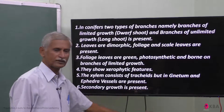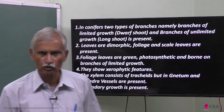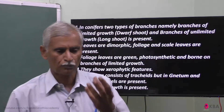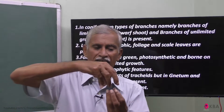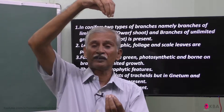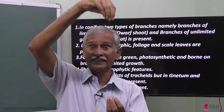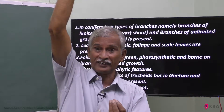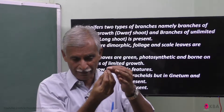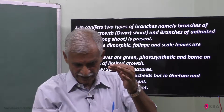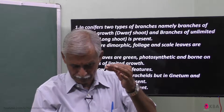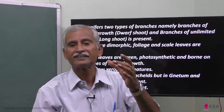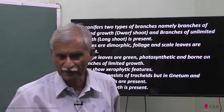Secondary growth is present. What is secondary growth? In primary growth, a plant stem has a meristem at the top with undifferentiated cells, allowing the stem to elongate. The root also has a meristem at the apex. This elongation of stem or root is called primary growth.